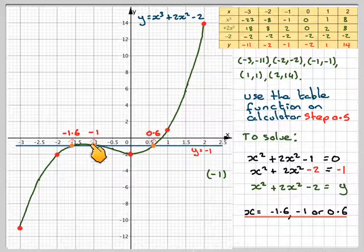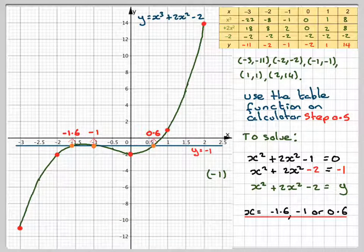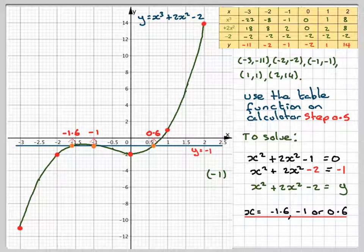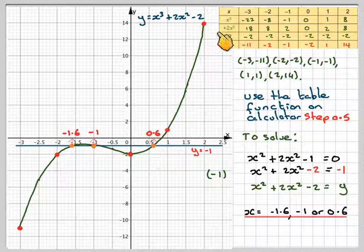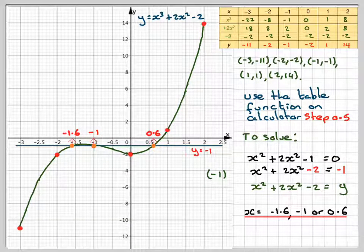And then we have that x is equal to minus 1.6, minus 1 or 0.6 from the graph. The important thing is you show how you got your answer. And so drawing straight lines, make sure you draw it with a pencil and a ruler. There should be no ink on your graph. It should be drawn with a pencil.